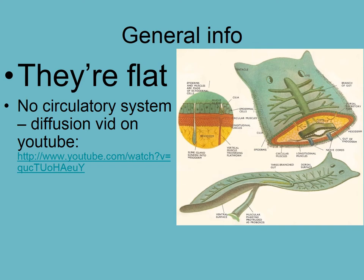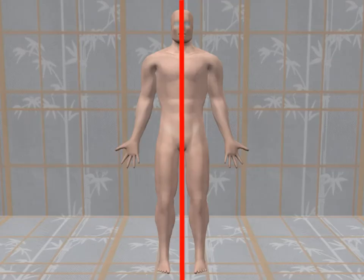You can't guess why flatworms are called flatworms — it's because they're flat. There's no circulatory system, and that means the only way to get oxygen into the center tissues is by diffusion, which works very slowly and can't keep up with metabolic activity in the deepest tissues as they get too thick. The smallest surface area to volume ratio of any shape is a sphere, so as you get more round, you've got more tissue needing oxygen compared to the surface area where diffusion can happen. So you should probably watch the circulatory system video, linked on Moodle, to understand diffusion.